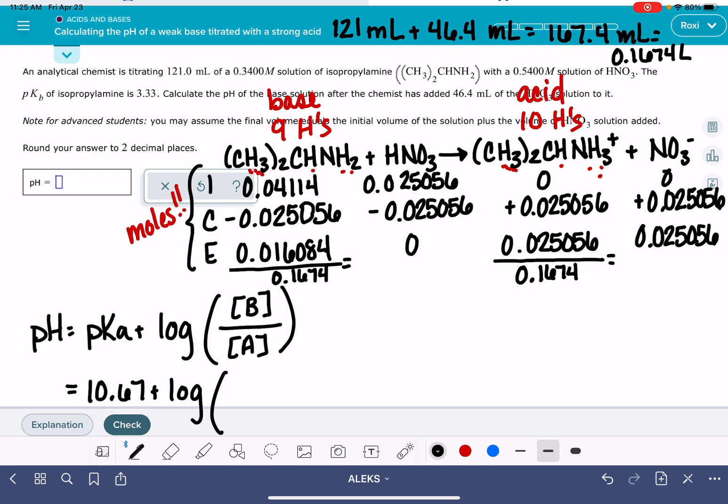And that's going to give us these numbers in molarity. 0.025056 divided by 0.1674 is 0.1497 molar. And 0.016084 divided by 0.1674 is 0.09608 molar.